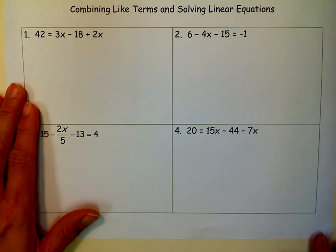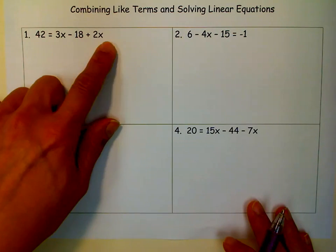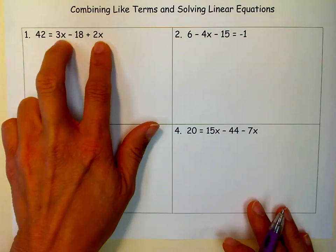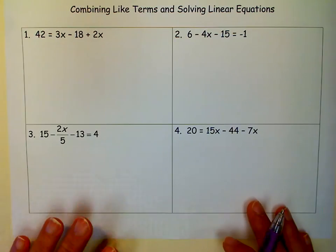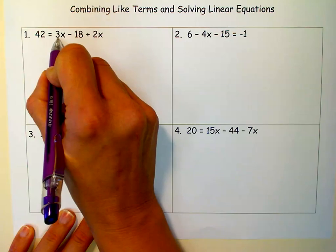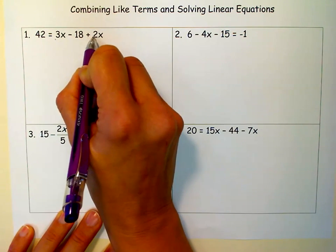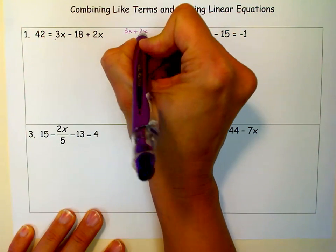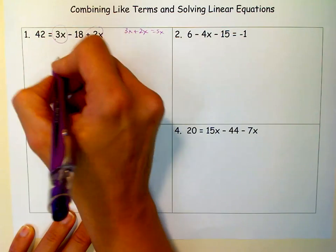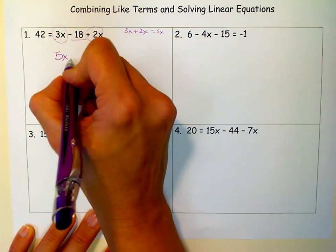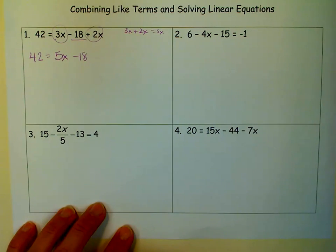If you look at example one, you'll see that on the left side there's just a number, but on the right side we have two x terms and one constant term. So we want to combine the two x terms. We do that by taking whatever the sign is in front of it. If there isn't one it's 3x, and this says plus 2x, so we have 3x plus 2x, and that equals 5x. When we combine these we get 5x, and what's left is minus 18 on the right side, and we just drop down the 42 because there was nothing on the left side that we needed to do.